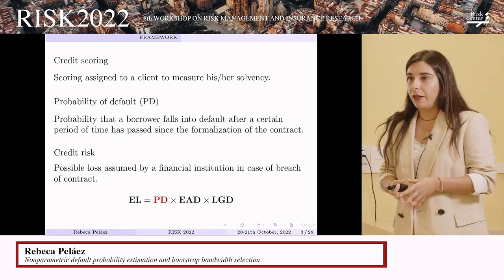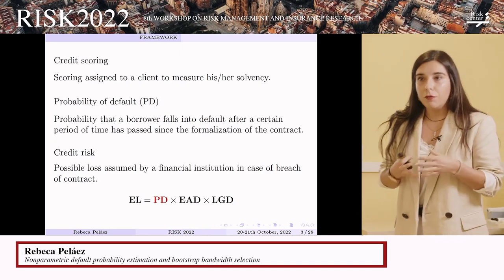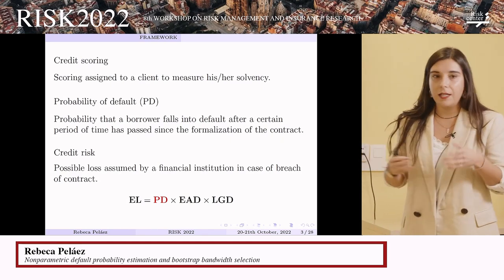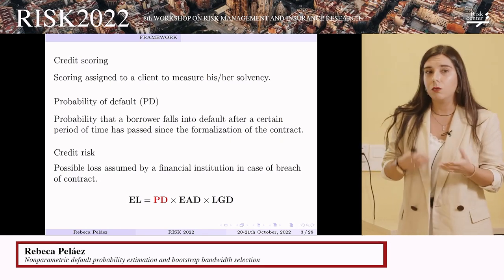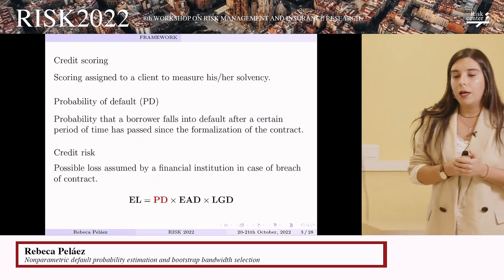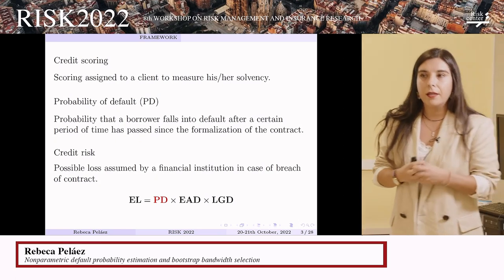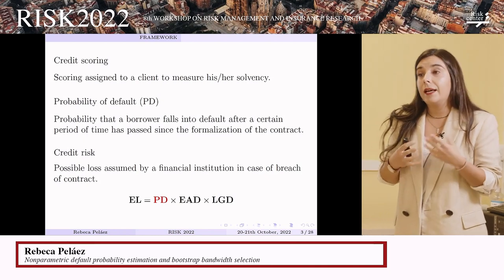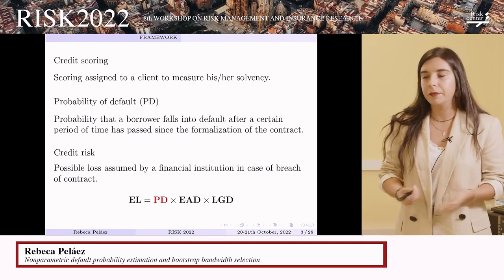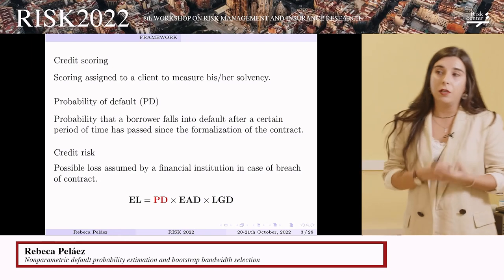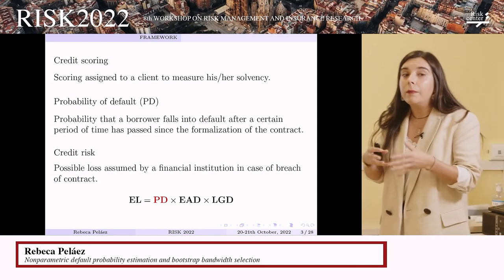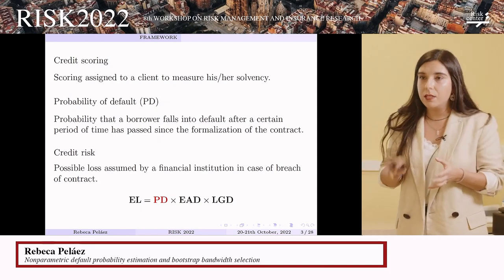When a client goes to a bank to apply for a credit, the bank evaluates the client's capacity to face the payment. They base themselves on variables such as career rates and amount of money in the bank, and assign the client a credit scoring which measures their solvency. But once the credit is granted, the bank still assumes a risk — the risk that the client may at some point declare themselves unable to face the payment of the debt. So it is interesting for financial institutions to know the so-called probability of default: the probability that a borrower will become insolvent after a certain period of time since the granting of the credit.